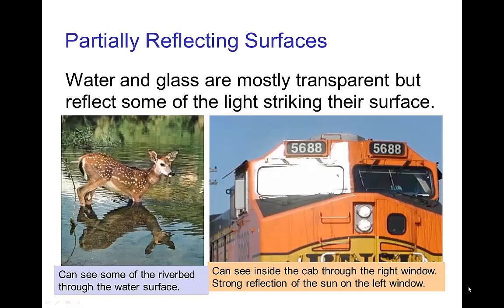Partial reflection. Some surfaces are partially reflecting. We see examples where the reflection from the surface of water and from the surface of glass is partially reflecting but partially transmitting. We can see some of the riverbed bottom, some of the logs on the bottom. With this train on one side, we see a strong reflection of the sun. On the other side, we can see in through the window — you can see the hat of the guy driving the train.